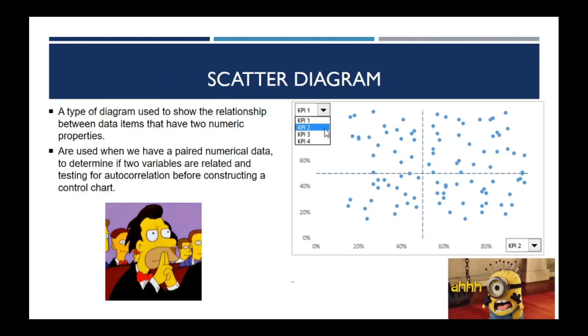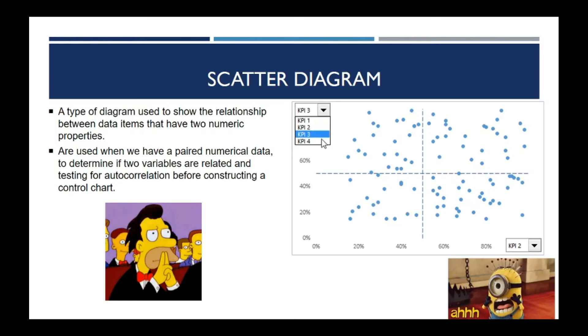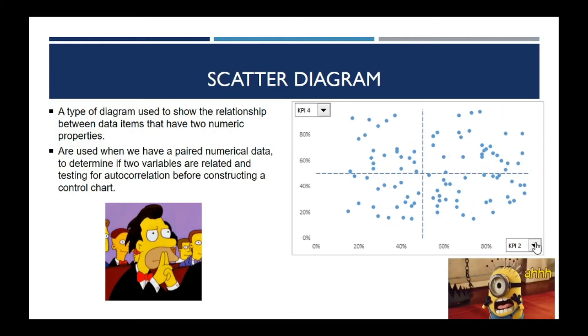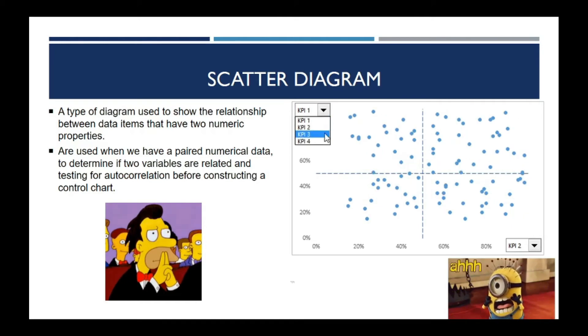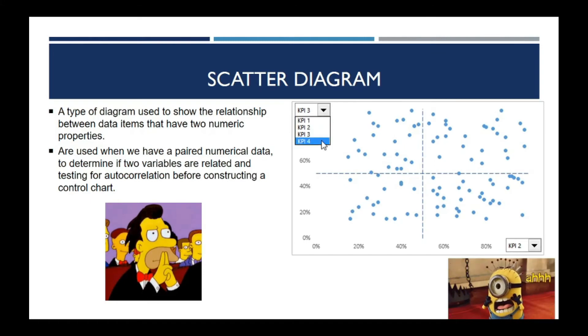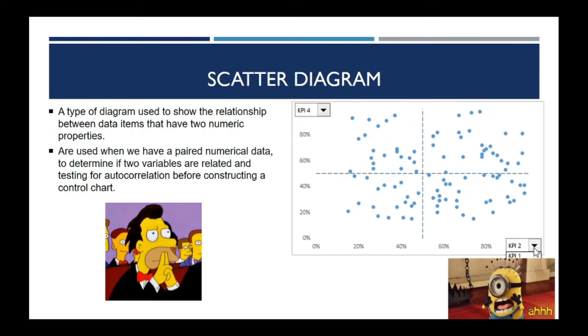Next, we have the Scatter Diagram. As you look on your right, Scatter Diagram is a type of diagram used to show the relationship between data items that have two numerical properties plotted on x and y axis.